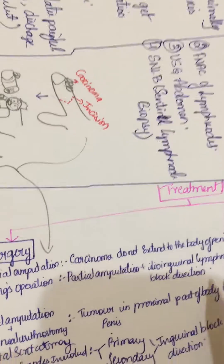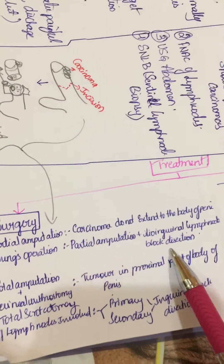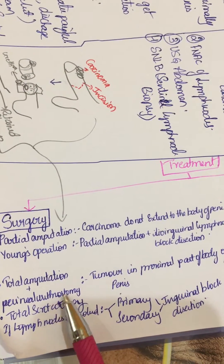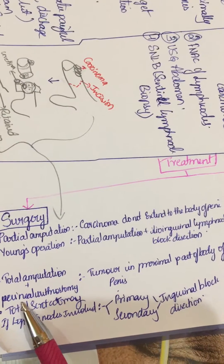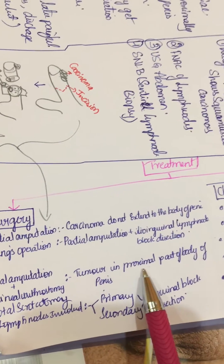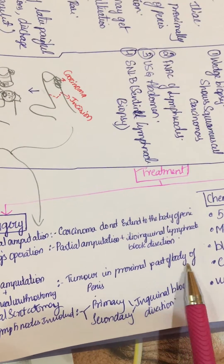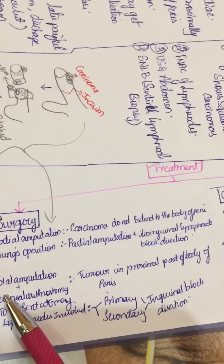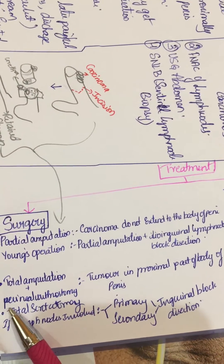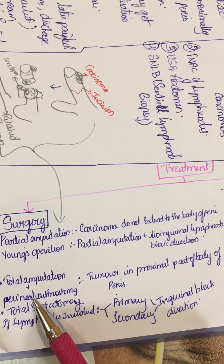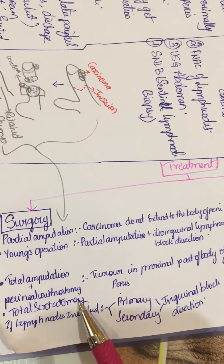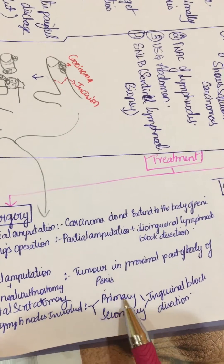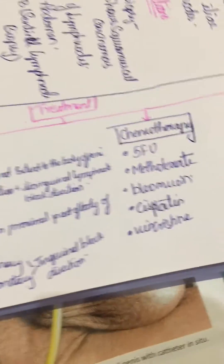Inguinal group lymph node block dissection and total amputation of the penis with perineal urethrostomy is done for tumor in the proximal part of the body of the penis. Total amputation, perineal urethrostomy, and total scrotectomy are performed when lymph nodes are involved.